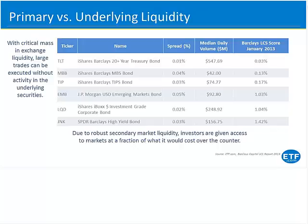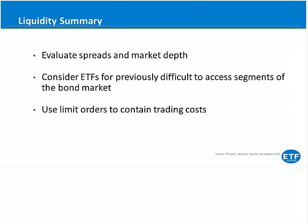The takeaway here is really to consider ETFs for all segments of the fixed income market, as they do bring a lot to the table. To evaluate if an ETF is the right way to go, consider the spreads and market depth of the ETF in comparison to the underlying market. Also consider the benefits of instantaneous implementation — the fact that you can execute right now. And use limit orders to contain trading costs and to unlock contingent liquidity.